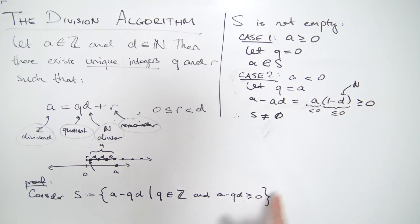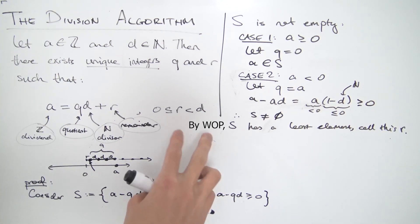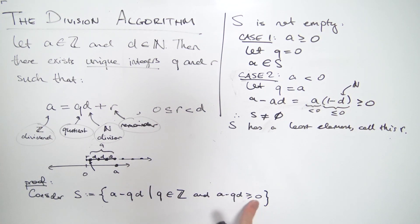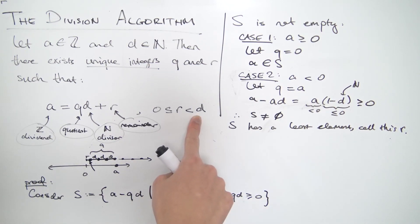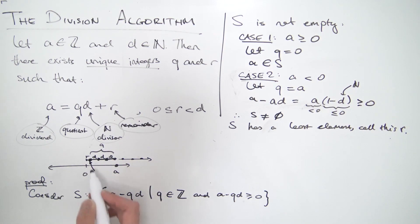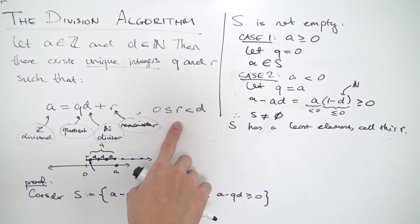Since S only contains positive integers, it has a least element, which we call R. The next thing to show is that R must be between zero and D. It's clear R is greater than or equal to zero, since the set only contains positive elements. All that remains is to show R is strictly less than D. From the picture, if R were greater than D, we could fit in another interval, meaning R wouldn't be the least element — the element below it would be.